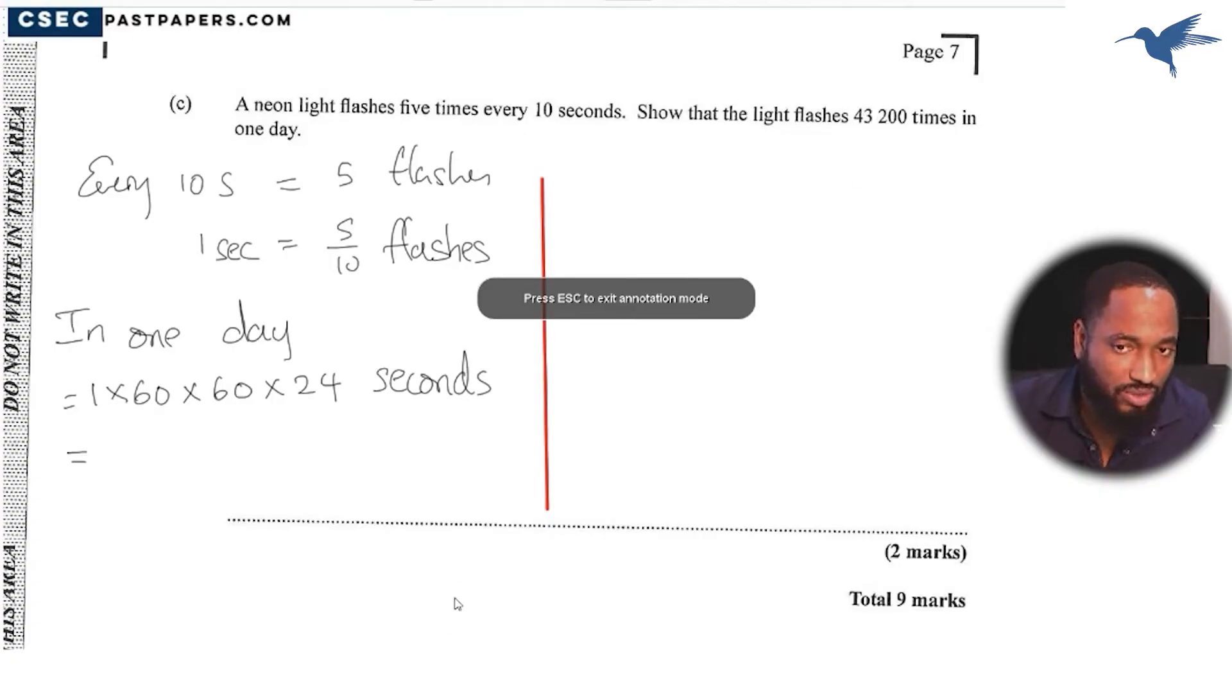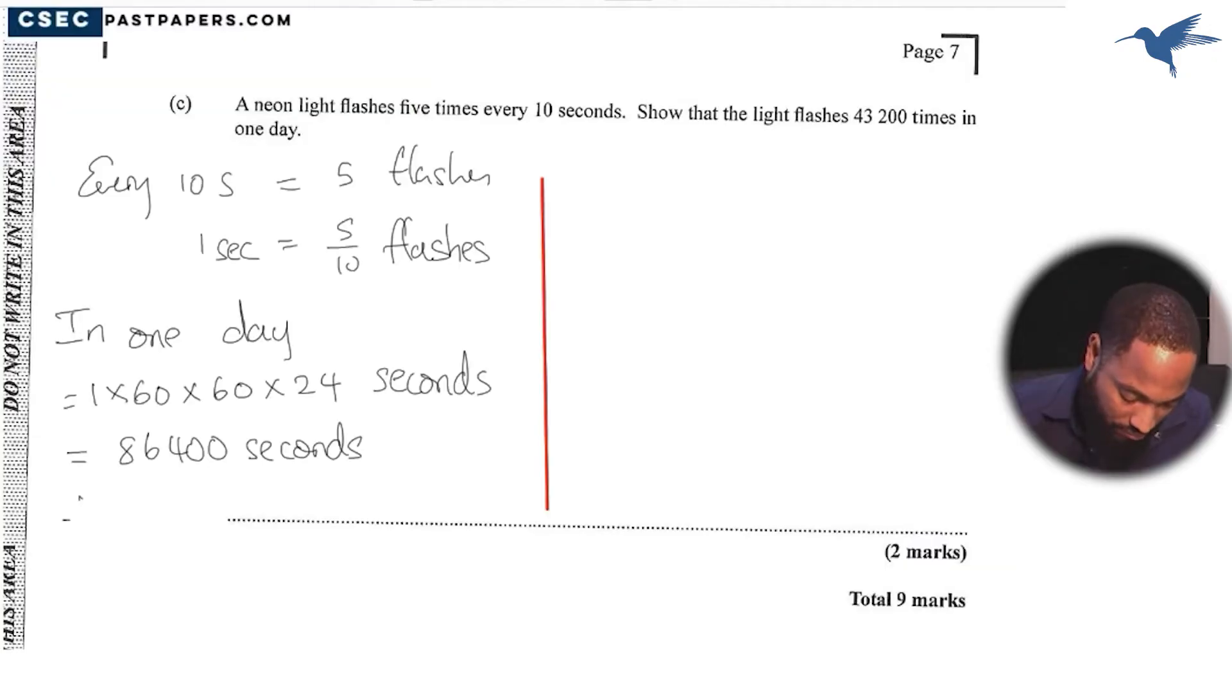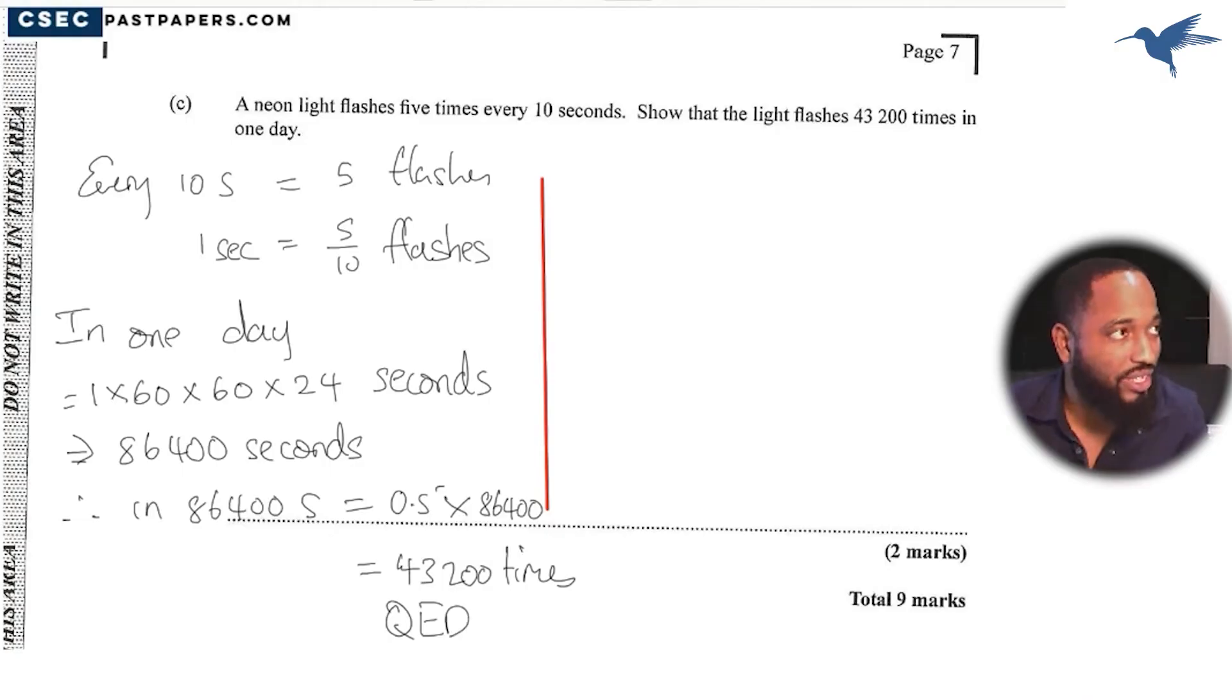In one day we have 86,400 seconds. Let's see, yes. So therefore there will be half this amount because every one second is half of a flash. So in 86,400 seconds, we expect the 0.5 or the 5 over 10 multiplied by the 86,400, which is 43,200 times we'll have the flash.